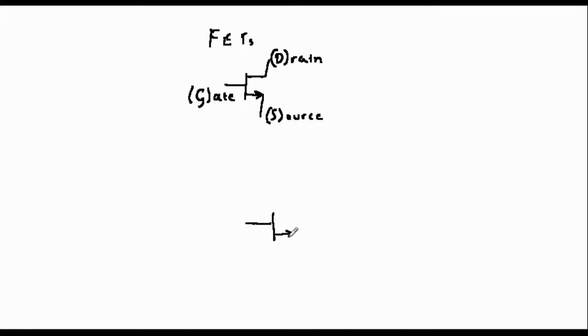The FET fulfills a very similar function to the Bipolar Junction Transistor or BJT that we've studied in the last few videos. The gate controls the current flowing into the drain and out through the source as shown on the screen.